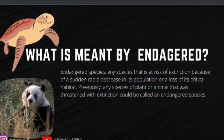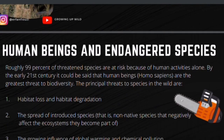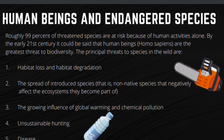What is meant by 'endangered'? Endangered species are any species at risk of extinction because of a sudden rapid decrease in population or loss of its critical habitat. Previously, any species of plant or animal threatened with extinction could be called endangered. Roughly 99 percent of threatened species are at risk due to human activities alone. By the early 21st century, human beings — Homo sapiens, meaning 'wise man' — are the greatest threat to biodiversity. The principal threats to species in the wild are habitat loss and degradation, invasive species, the growing influence of global warming, chemical pollution, unsustainable hunting, and disease.